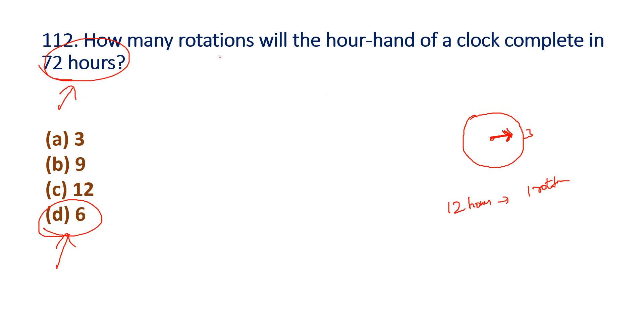So 72 hours: 72 divided by 12 equals 6. So 6 rotations are completed.